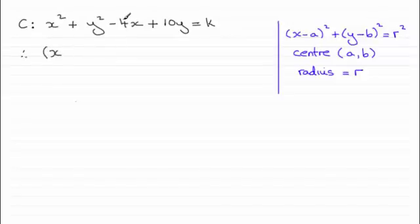we'd take the x and we'd halve the coefficient of x. So halving the minus 4 gives us minus 2, and then we square that. If you were to expand this bracket,